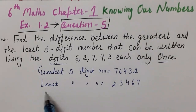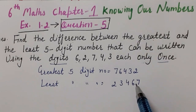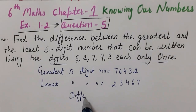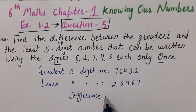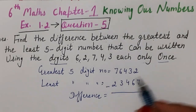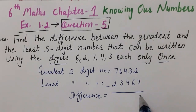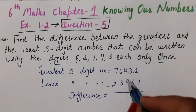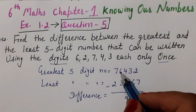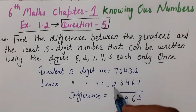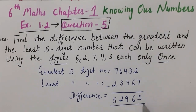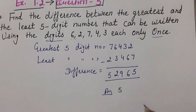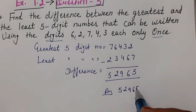Now we need to find the difference between these two numbers. So we subtract: 76432 minus 23467. Performing the subtraction step by step gives us the answer: 52,965. So the difference between the greatest and least 5-digit numbers is 52,965.